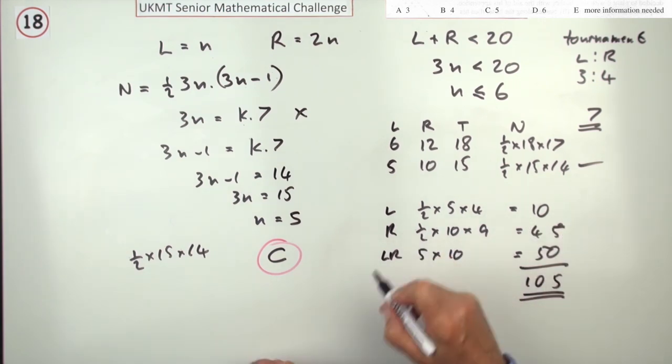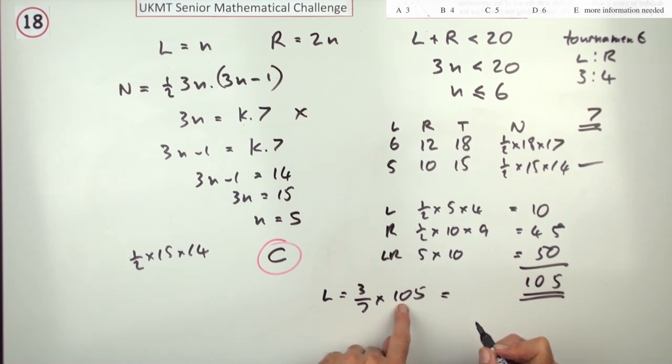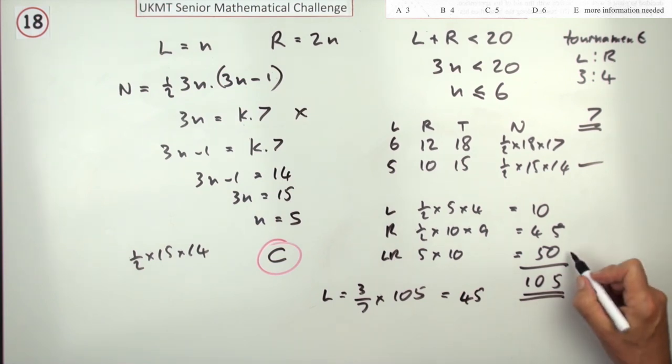So how did the left-handed players perform? Well, if the left-handed players won three-sevenths of the matches, that's 45 matches they won, they won 10 in their own right, so there's another 35 to go, so they must have won 35 out of those 50. But I didn't ask for any of that though, I just wanted this bit here, many left-handed players were there.